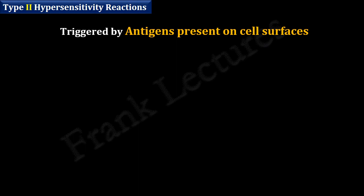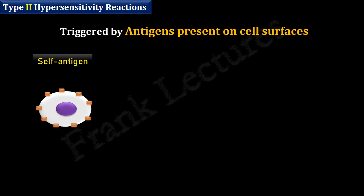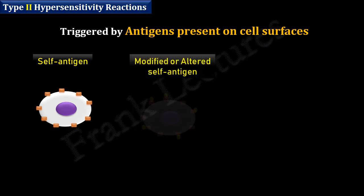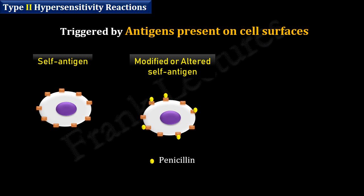Type 2 hypersensitivity reactions are triggered by antigens found on cell surfaces. These may be self-antigens — that is, self molecules present on the host's own cells and tissues — or they may be altered or modified self-antigens. For example, in some patients, penicillin binds to host cell surface molecules, resulting in the formation of new epitopes.